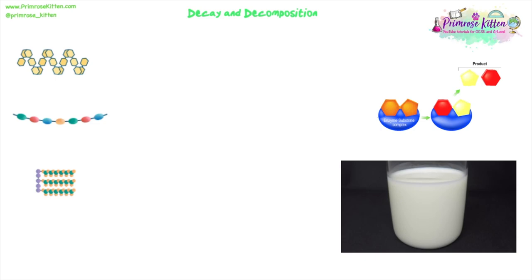This is going to include a recap of some topics about enzymes. Decomposers use enzymes to break down dead matter and waste into smaller molecules that dissolve in water, and they absorb those through their cells. They won't absorb all of them — the rest get released into the soil or water or the surrounding environment for plants to take up and use, which means they go back into the start of the food chain.